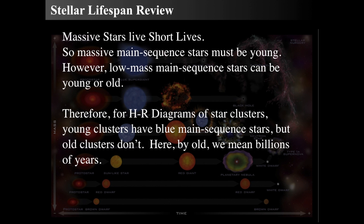Massive stars live short lives. If you're a massive main sequence star, you must be young — they live only a few million years. If you see an O, B, or A-type star, they must be fewer than 100 million years old; O and B stars are only tens of millions of years old. But low-mass main sequence stars can be either young or old — formed 10 million or 10 billion years ago — because they don't change too much. Young star clusters have blue main sequence stars; old clusters, up to billions of years old, do not.